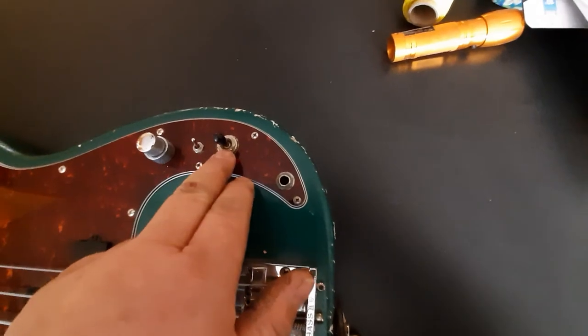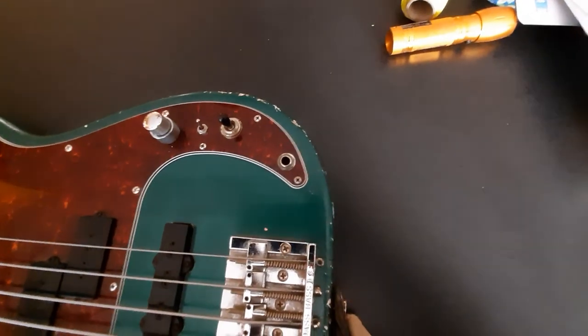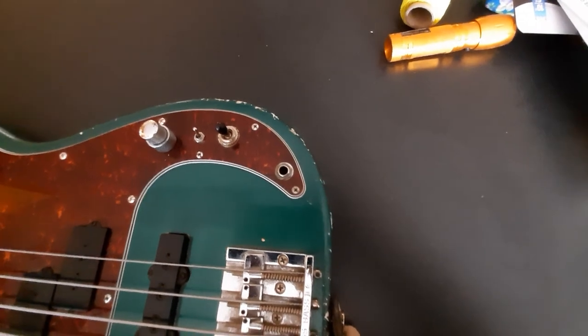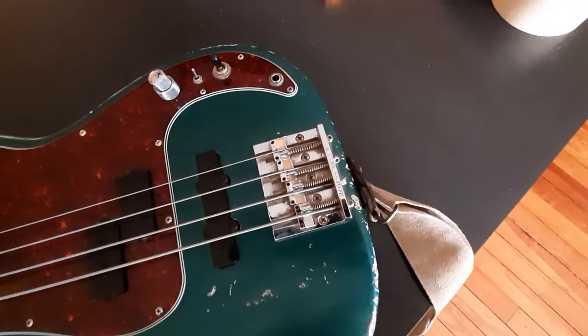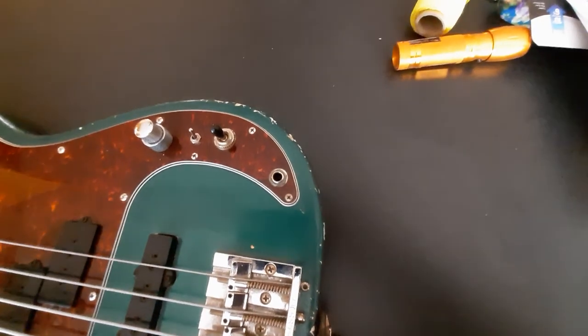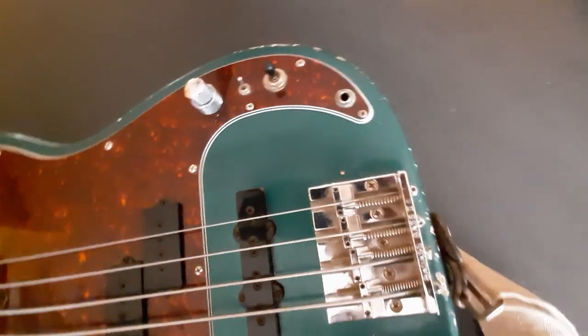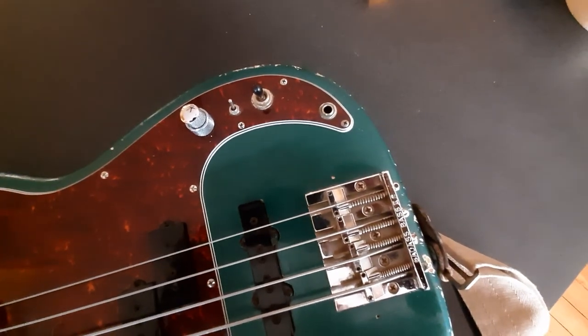And then here in the location where the original tone knob was at, that's where I put my three-way switch. And of course the output jack's in the stock position. And that is how I wire this bass. Hopefully that is satisfactory to those that are looking for a wiring diagram. Hope that helps, thanks.